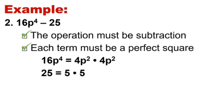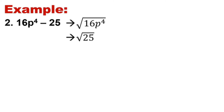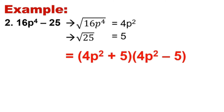Now let's get the factor. We have to get the square root of each term. The square root of 16 is 4, and for the square root of p raised to 4, you just divide the exponent by 2 to get p squared. So the square root of 16p raised to 4 is 4p squared. The square root of 25 is 5. So the answer will be 4p squared plus 5 times 4p squared minus 5.